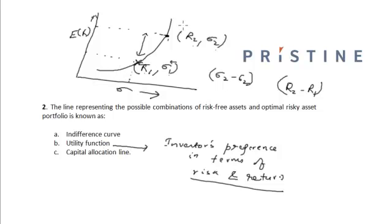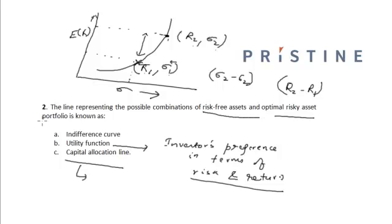The utility function of an investor is the same along the indifference curve. The Capital Allocation Line represents a line of possible combinations of risk-free assets and the optimal risky asset portfolio — the line that passes through the risk-free asset and reflects those possible combinations.